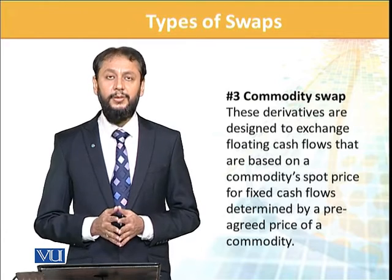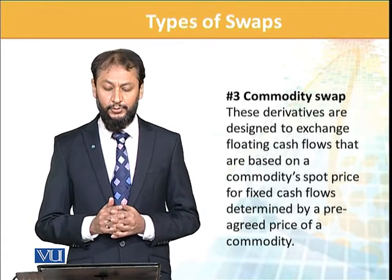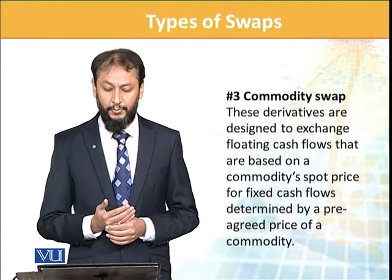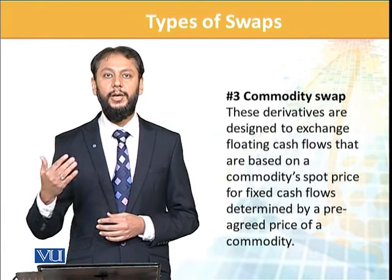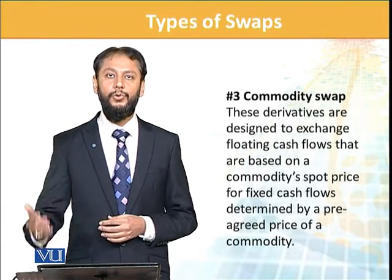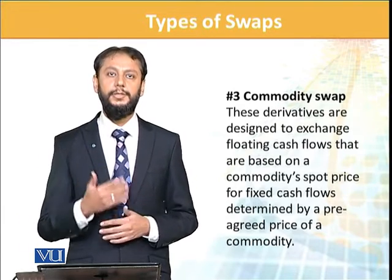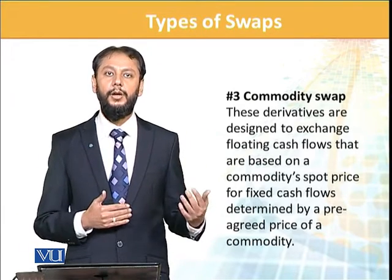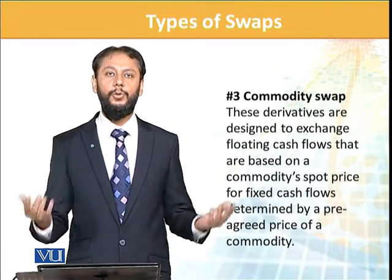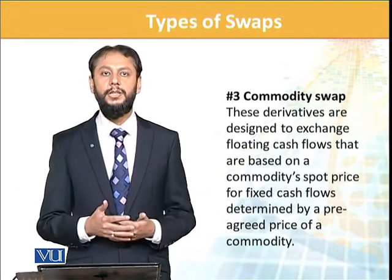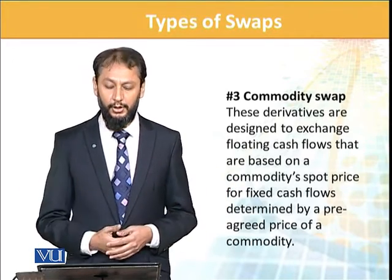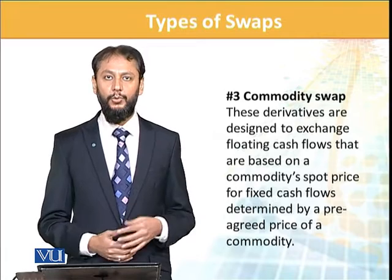In currency swaps, for example, one counterparty may deal in Pakistani currency and another in Chinese yen. Then there are commodity swaps — these derivatives are designed to exchange a floating cash flow based on commodity spot prices for a fixed cash flow, such as a gold return. Bank rate swaps are also a commonly used instrument.